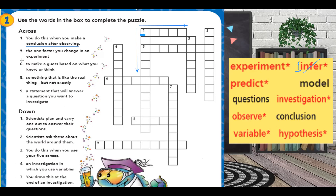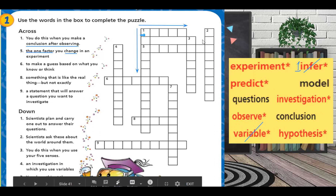Now, number five — the one factor you change in an experiment. What do I call it? Excellent. I call it variable. It's the one thing that I change in an experiment, and I call it variable. Variable is number five.